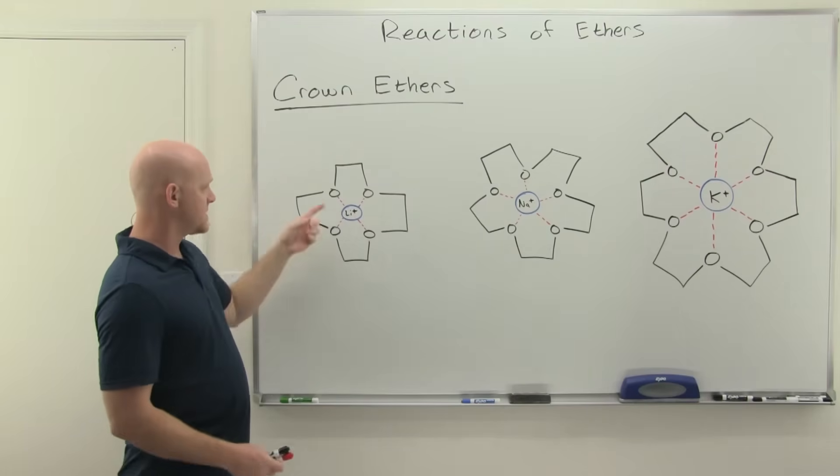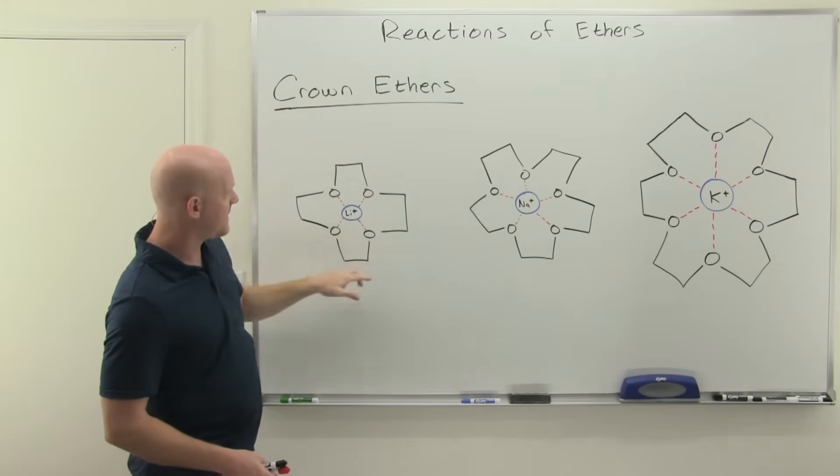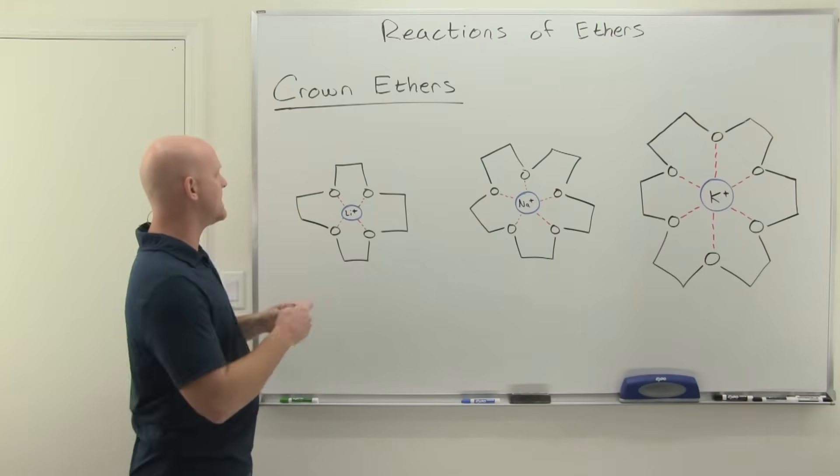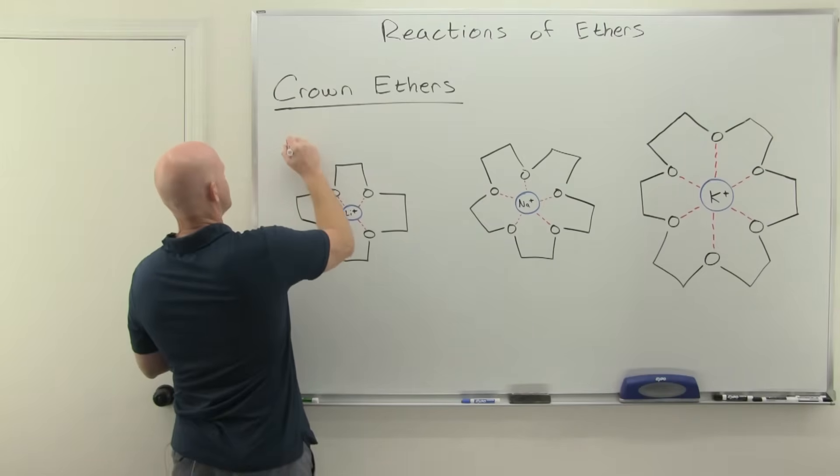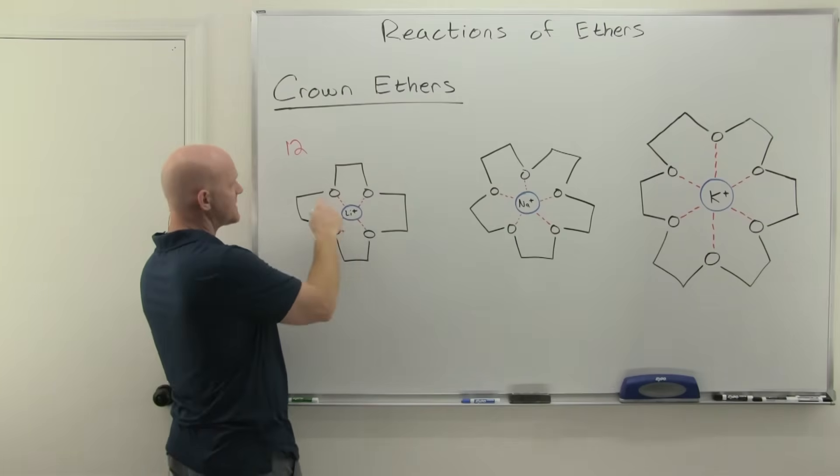If we take a look at the smallest one here with four oxygens, notice it's got two carbons for every oxygen. So it's got eight carbons, four oxygens, and the way these are named, you give the total number of atoms in the entire ring structure. That's eight carbons, four oxygens, that's 12 atoms total.